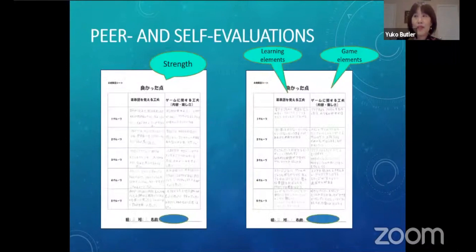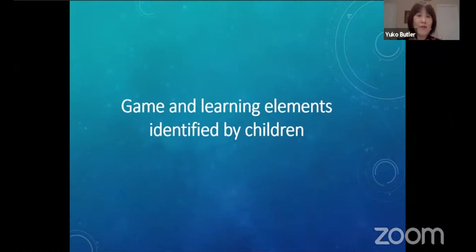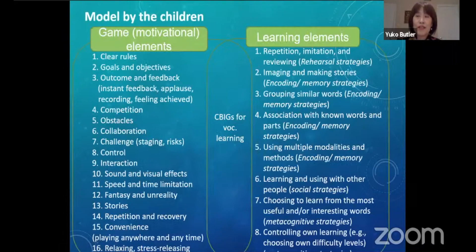The children wrote their evaluations in an open-ended format. They were asked to identify which game and learning elements were most strategically incorporated in each design in order to make the games enjoyable and effective for vocabulary learning. Amazingly, the children identified almost everything that researchers have been discussing in the literature — they already had very sophisticated theories of motivation and learning by themselves.